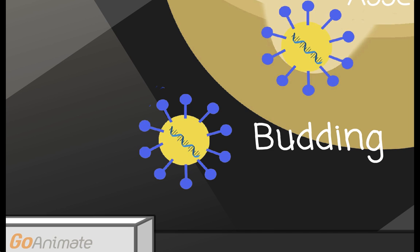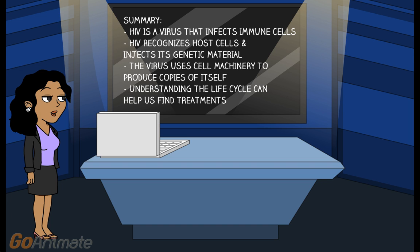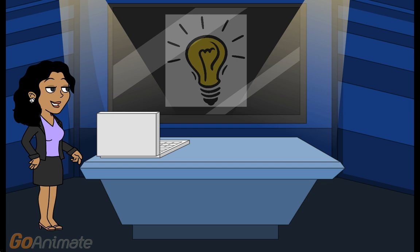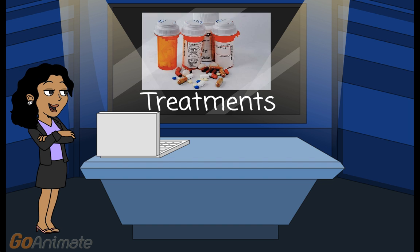And finally, we have budding. Budding is when the HIV buds out of the cell and is now able to infect other immune cells. Now you know how HIV affects human cells, and you're probably wondering why any of this matters. To be able to stop HIV and find effective treatments, it's important for scientists to know how the virus works. Now that you've learned more, perhaps you'll join these efforts to find a new treatment. Please join us next time to learn more about treatment options for HIV.